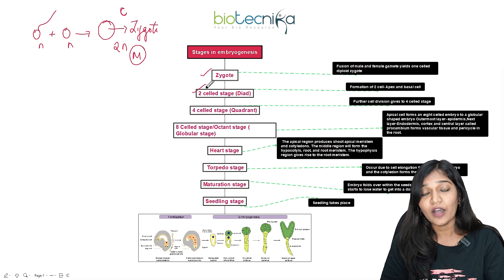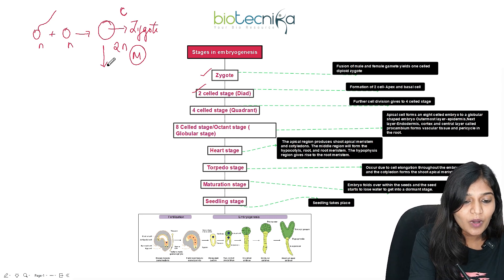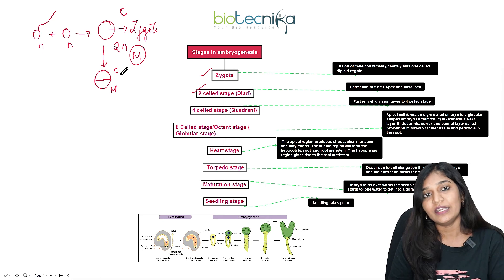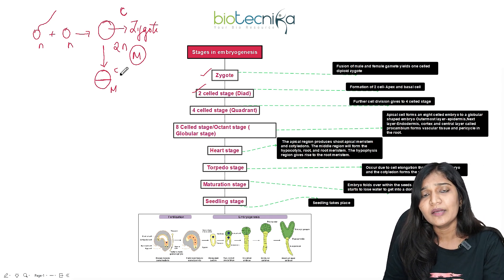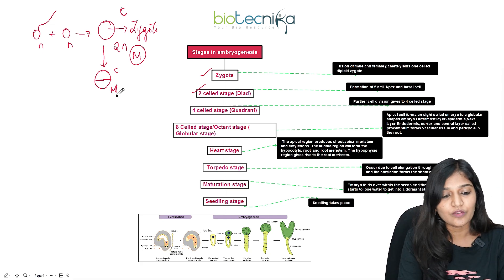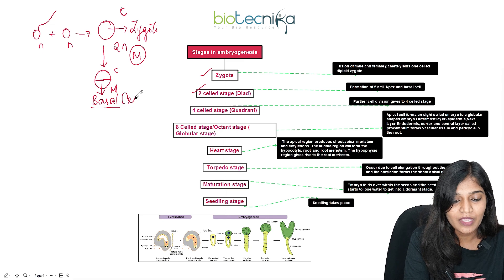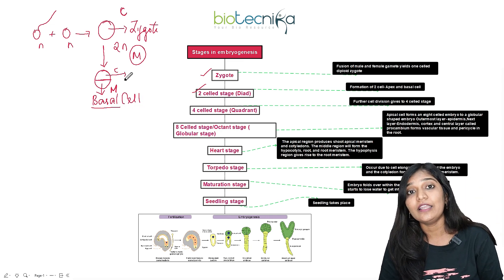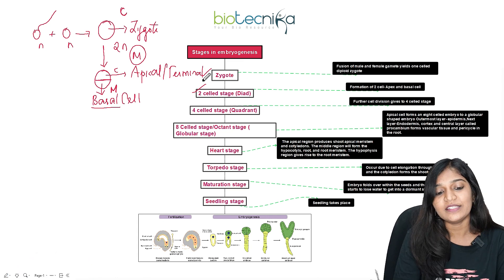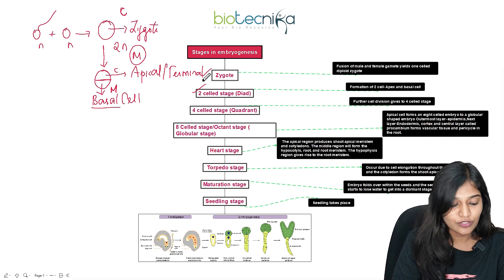The next stage is the two-cell stage. This one cell divides into two cells like normal mitosis. The cell towards the micropyle end is called the basal cell, and the cell above is called the apical cell or terminal cell. The basal cell undergoes a transverse division and keeps dividing — forming two cells, then four, then eight — eventually forming the suspensor cells. The cell at the very bottom is called the hostorial cell.